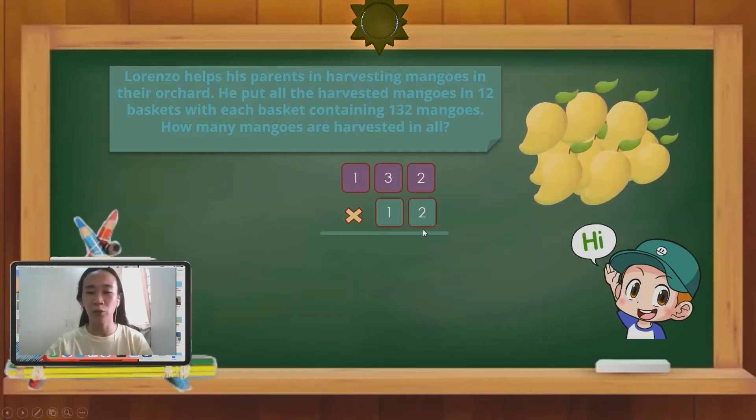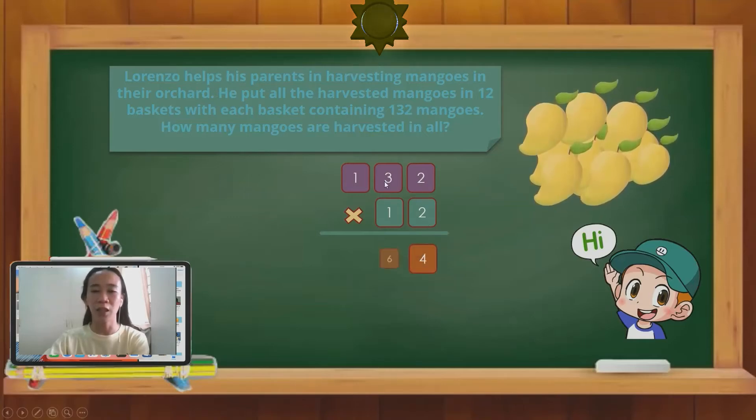First, we will do 2 times 2. That will be 4. Next, 2 times 3. That will be 6. And 2 times 1. That will be 2. So this row is the answer for 2 times 132.